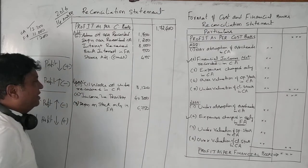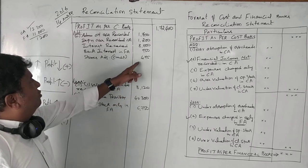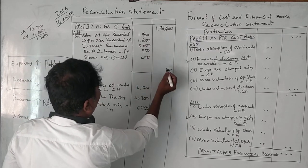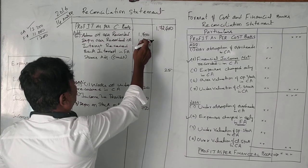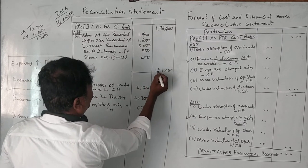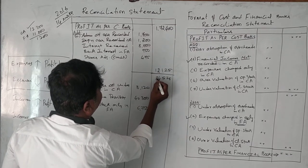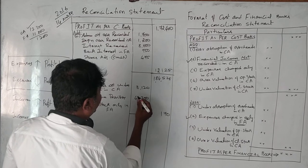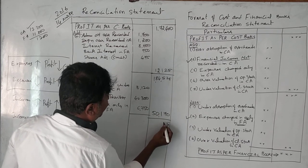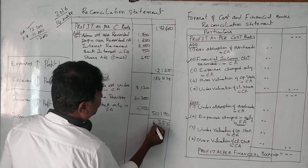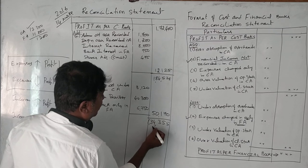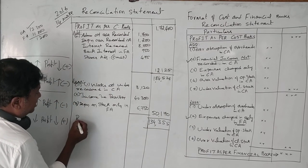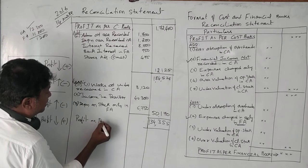That's all the items. If you look at the question, there are about eight points. We add the additions: 1,700 + 1,200 + 8,000 + 14,300 + 750 + 475 = additions total. We deduct: 3,120 + 6,750 = deductions. The final answer — profit as per financial accounting — is one lakh thirty-four thousand three hundred fifty-five rupees (1,34,355).